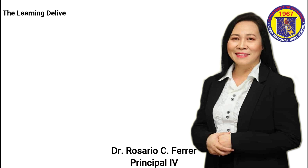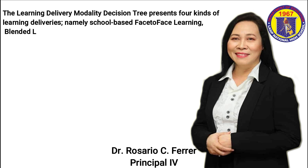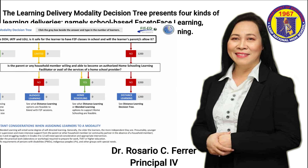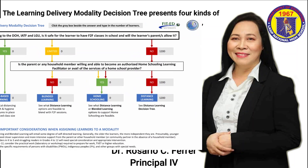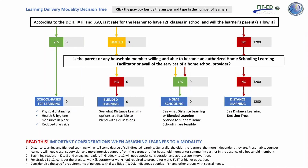The learning delivery modality decision tree presents four kinds of learning deliveries: school-based face-to-face learning, blended learning, homeschooling, and distance learning. As you can see, our decision tree shows that of 1,200 enrolled learners, all their parents did not allow face-to-face classes in school, thus resulting in distance learning.